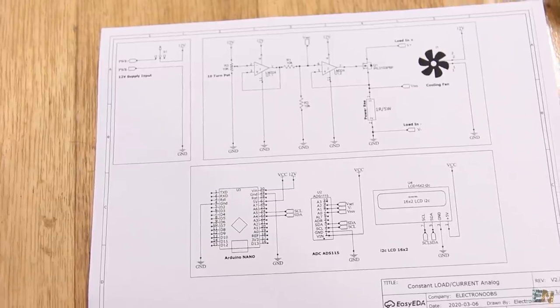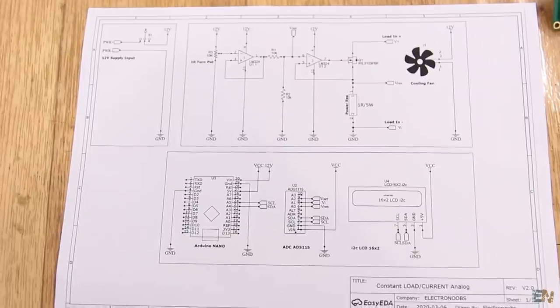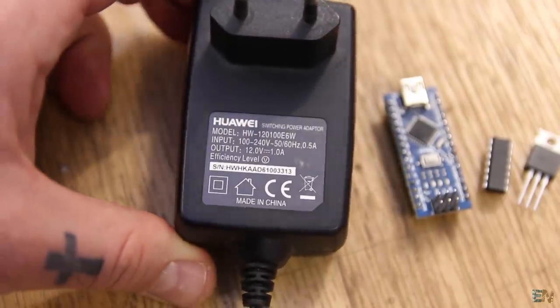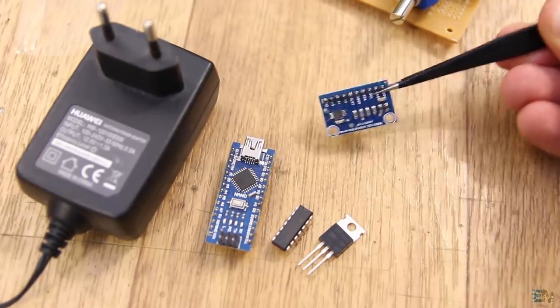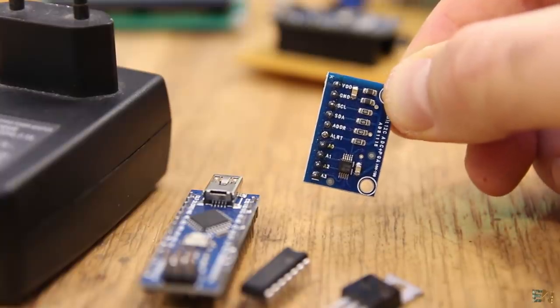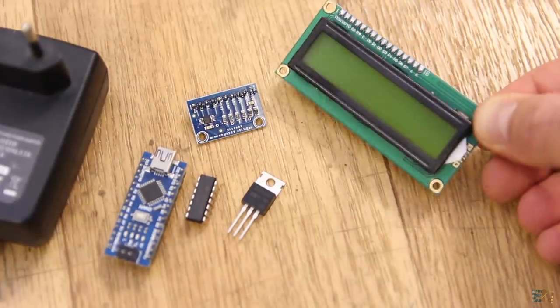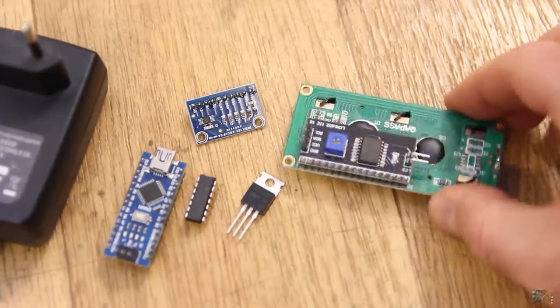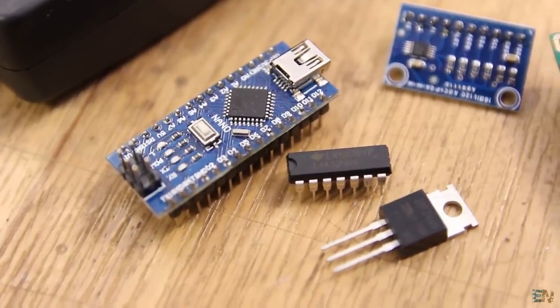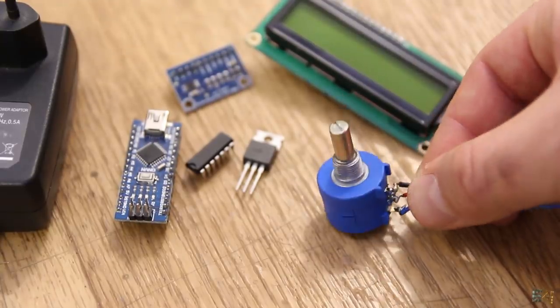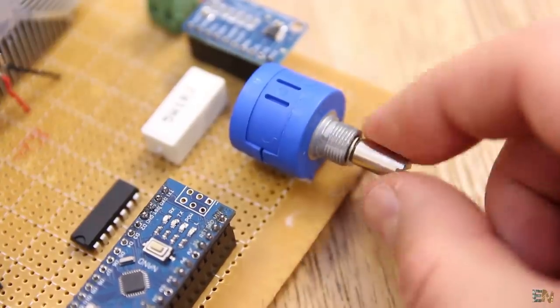So this is the final schematic for this project. You can find it below in the description, so download it and have it in front of you. To supply the Arduino I will use a 12V DC transformer like this one. To increase the ADC precision from 10 bits that the Arduino has, I will use the ADS1115 ADC that has an I2C communication. Then to print the values I will use this LCD screen that also has an I2C communication, so we only need 2 wires. The op-amp is the LM324. The potentiometer should be of at least 10 turns. If you use a 1-turn potentiometer, it will be very difficult to set the current value precisely.